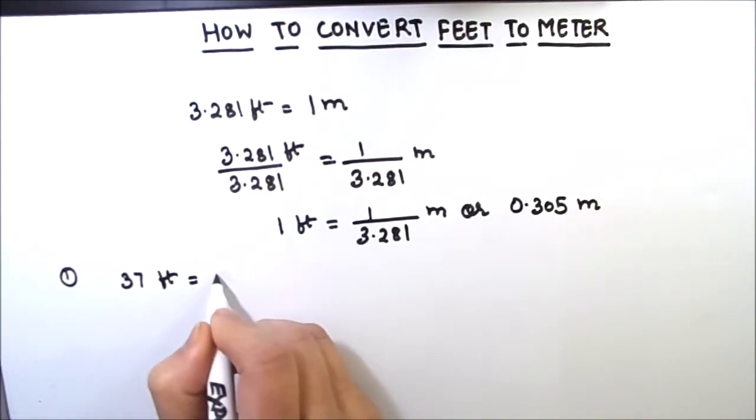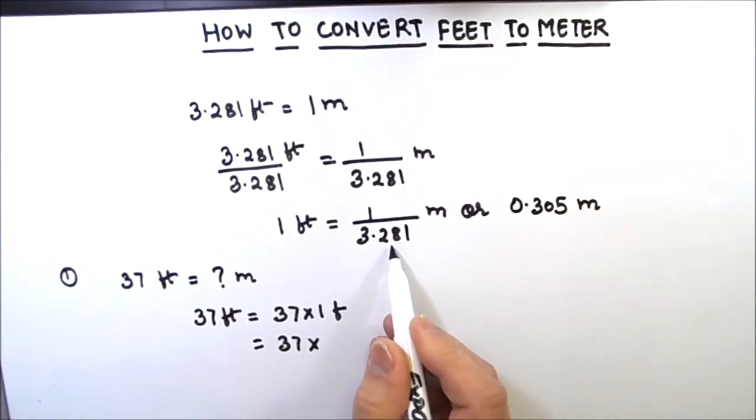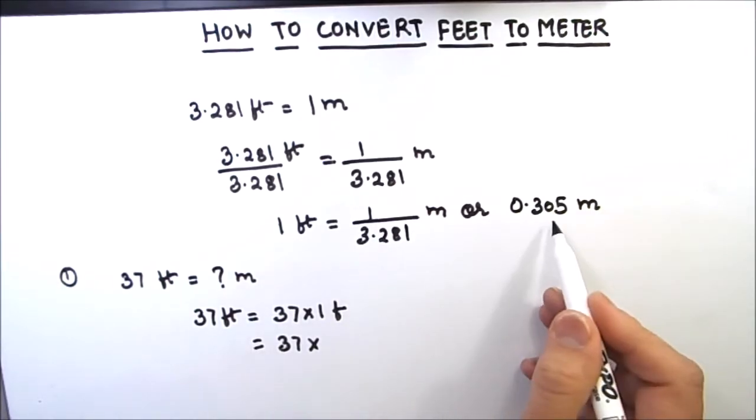Let us find out how much is 37 feet in meters. 37 feet can be written as 37 times 1 foot, which is equal to 37 times 1 divided by 3.281 meters. Here I am writing in terms of fraction.